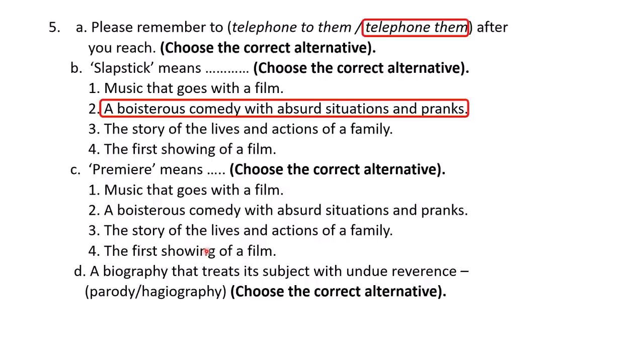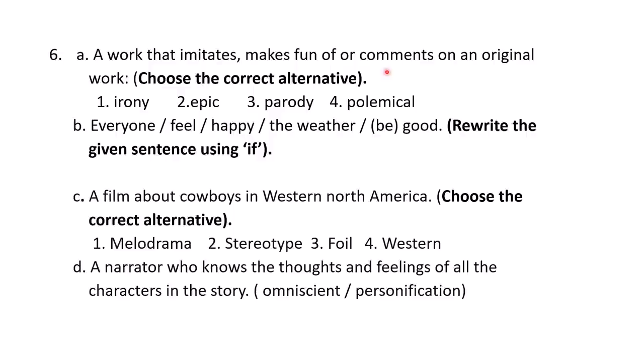C: 'Premiere means' — choose the correct alternative. The meaning of premiere is 'the first showing of a film.' D: A biography that treats its subject with undue reverence — what is it called? The answer is hagiography. This is the biography which treats its subject with undue reverence. Reverence means respect and regard.